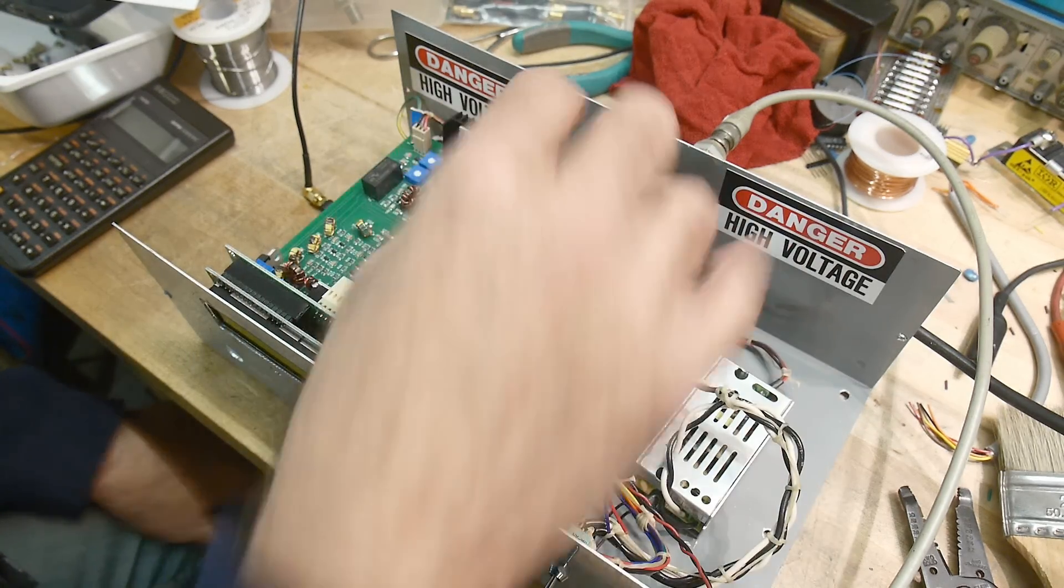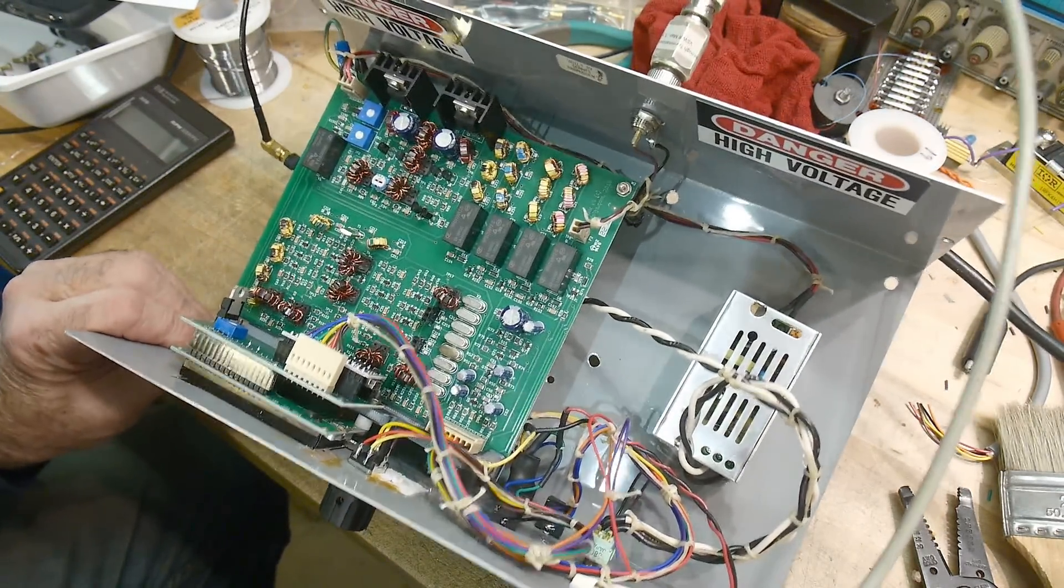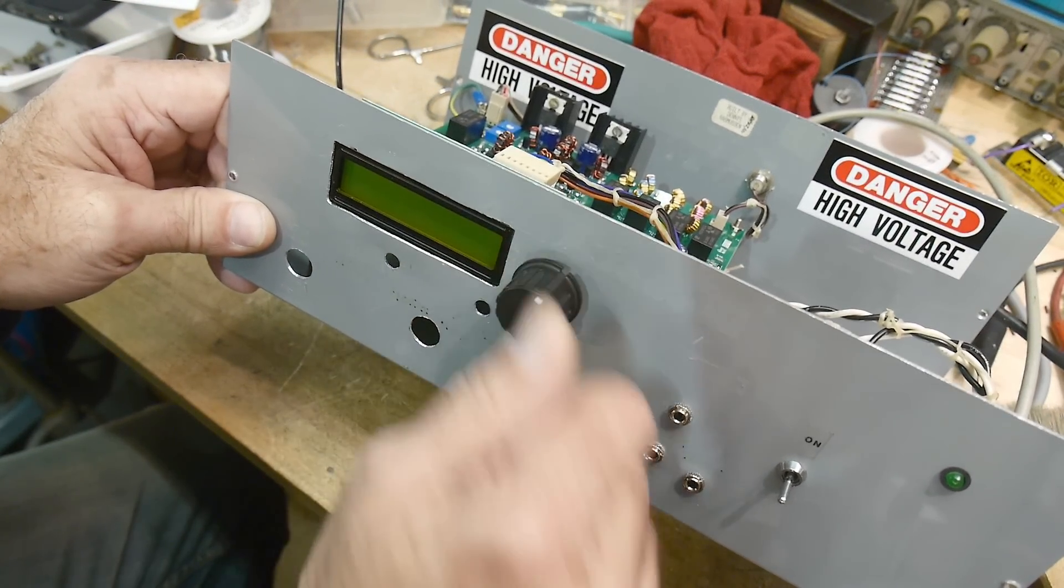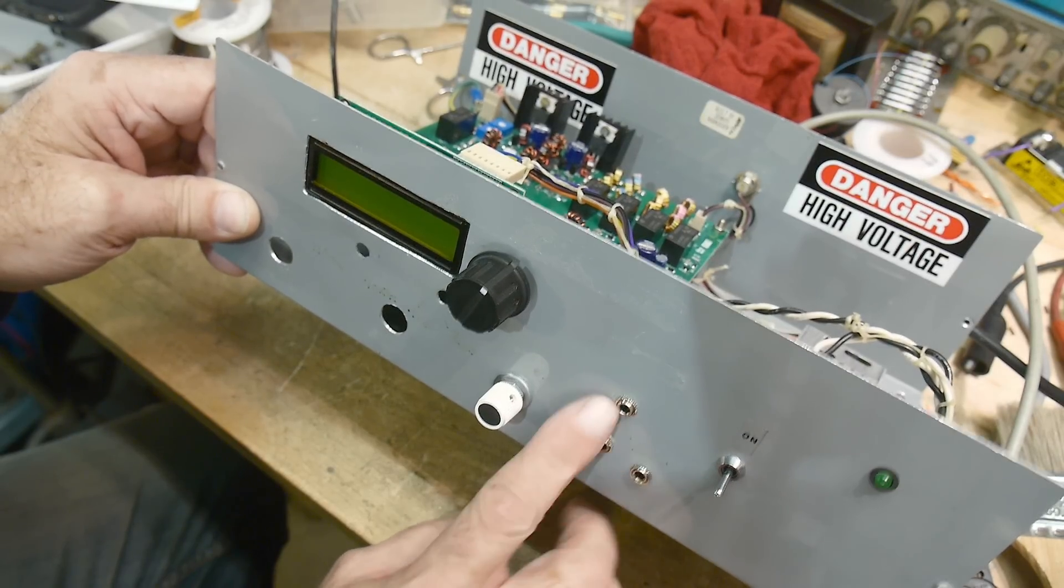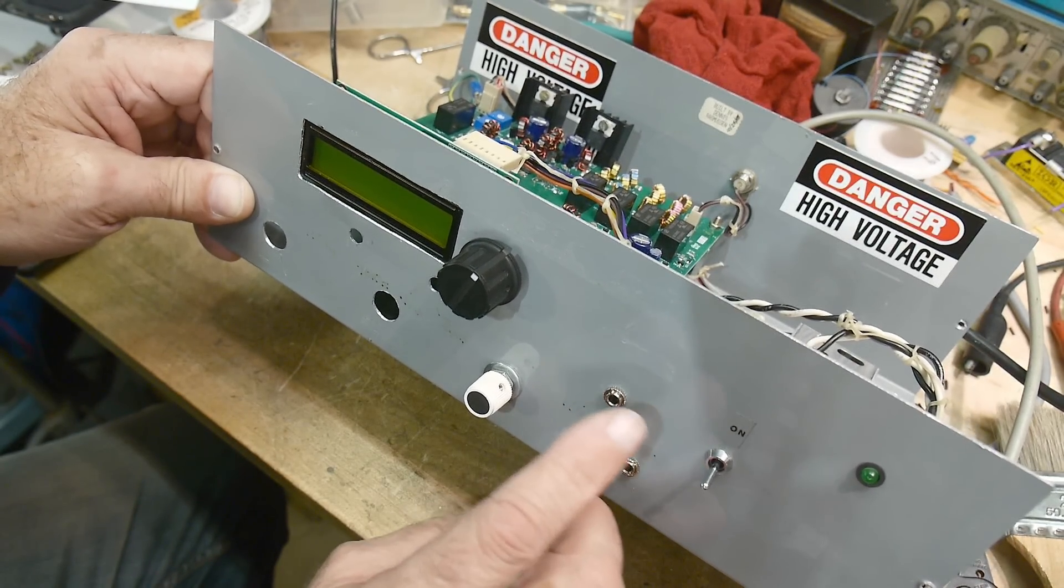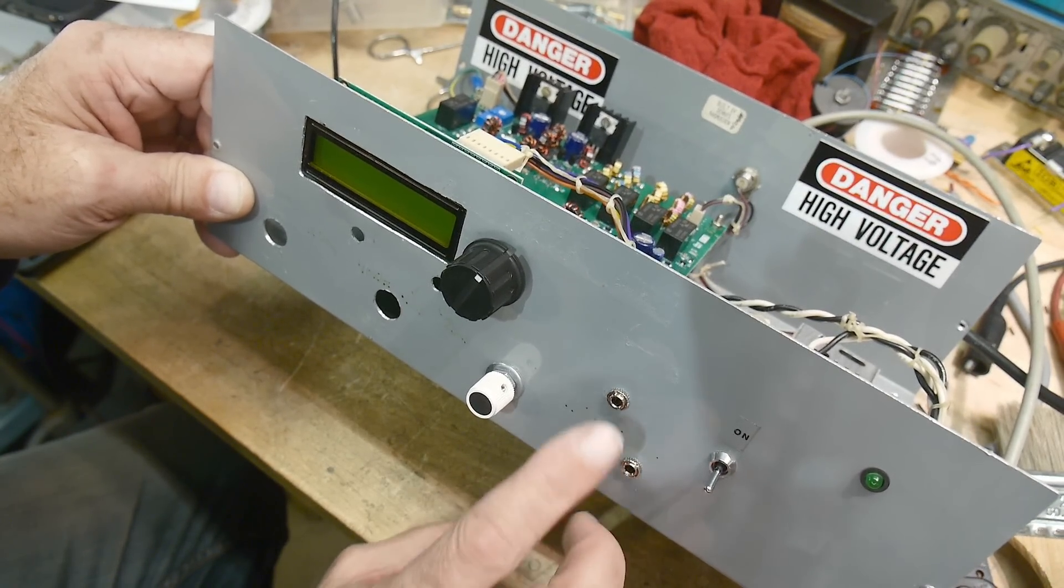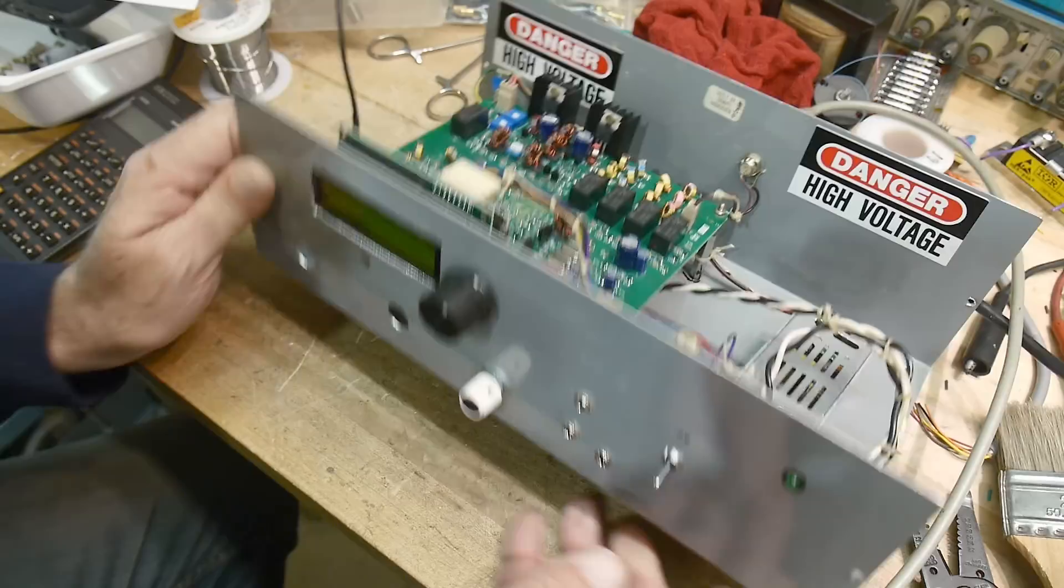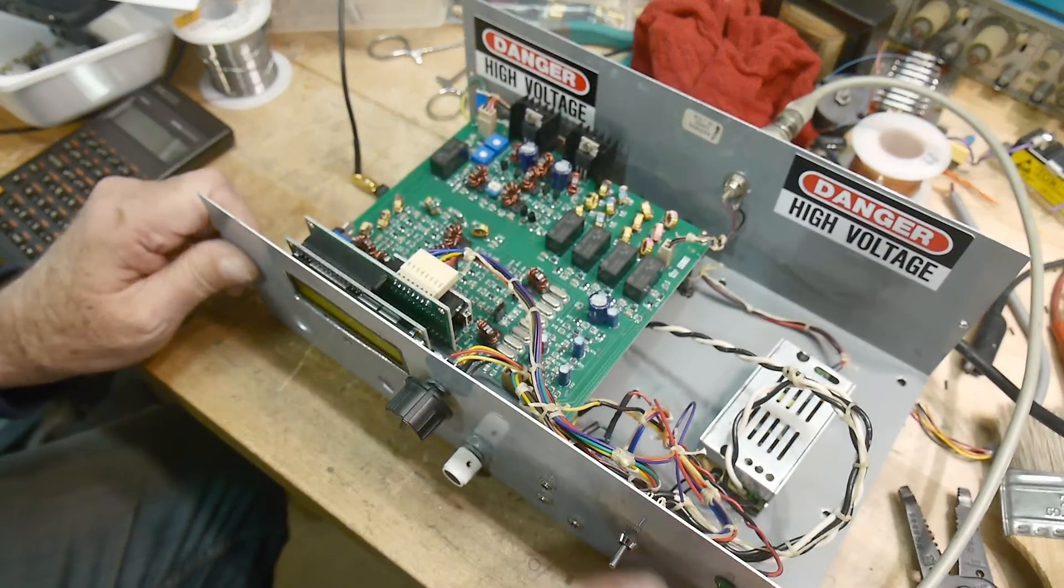And so I have it in the box now, I have the display, this is a rotary knob, volume, these here for microphone, earphone, and microphone, earphone, I don't remember now, and then the on-off switch with an LED.